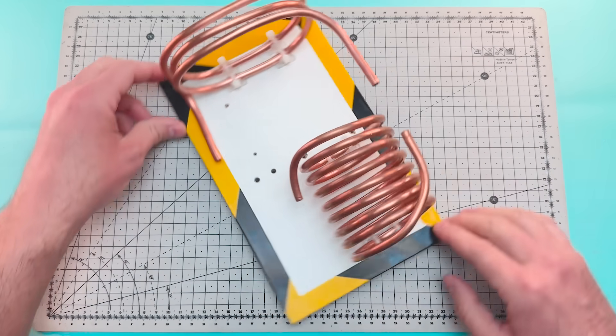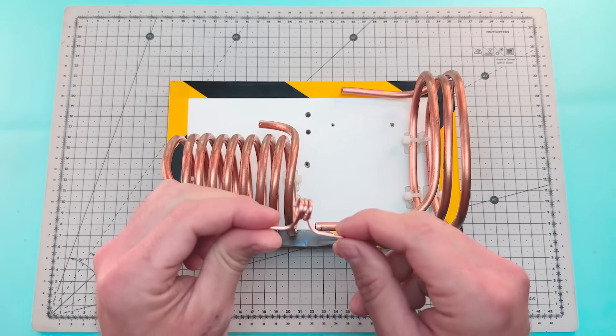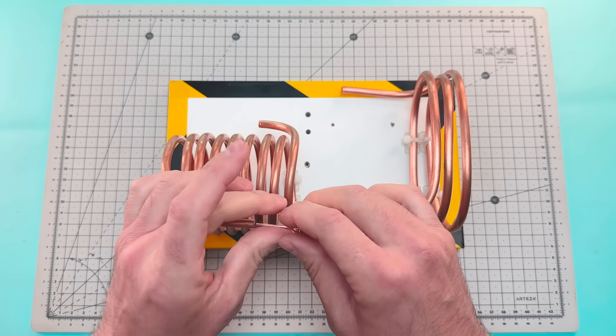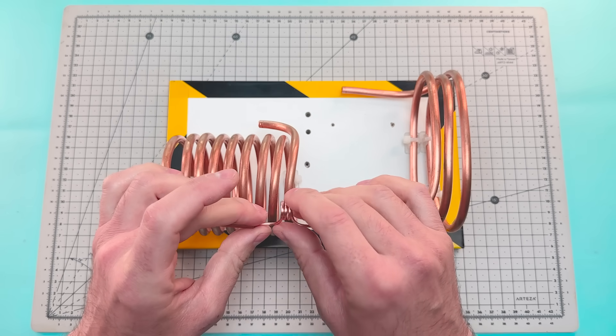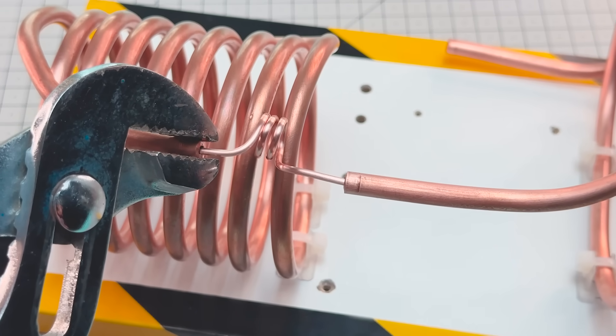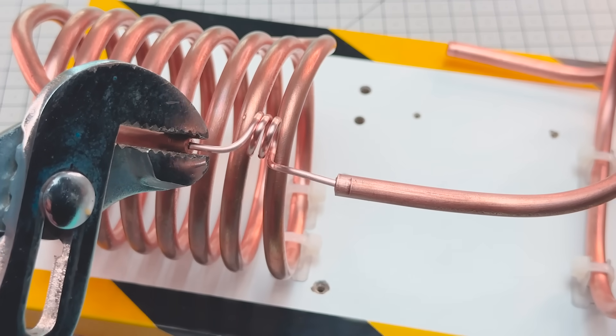We're going to insert the capillary tube into the end of the condenser, and the other side into the evaporator. Flatten the two sides to fix the capillary.